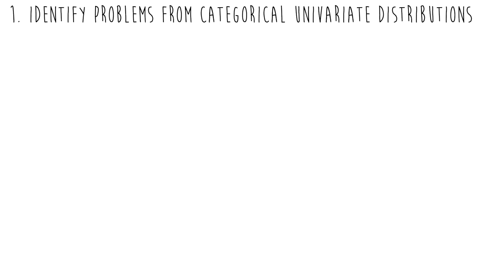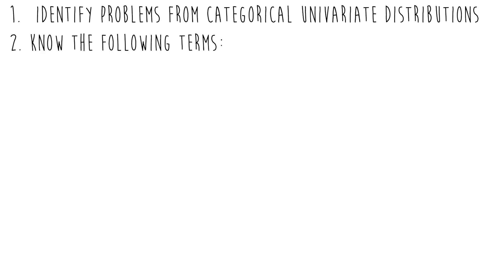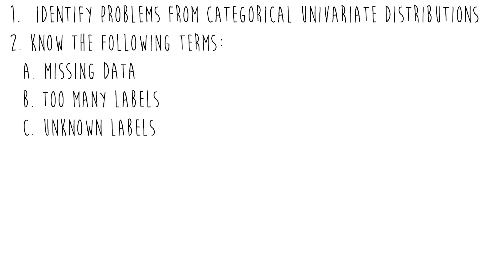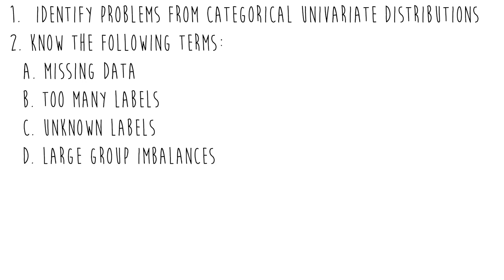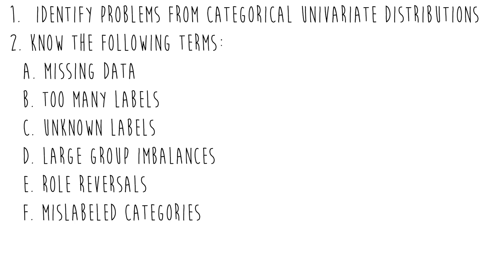So with that, let's review our learning objectives. Number one: identify problems from categorical univariate distributions. Number two: understand what the following terms mean — missing data, too many labels, unknown labels, large imbalances of groups, role reversals, and mislabeling of categories — and make sure you know how to identify each of those.